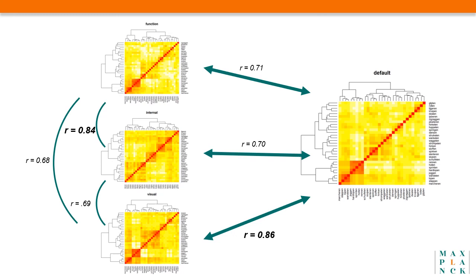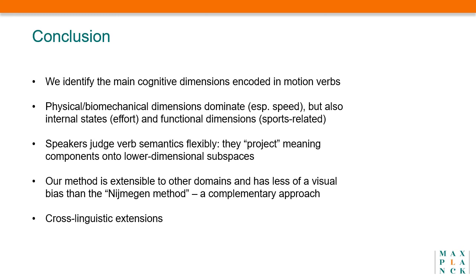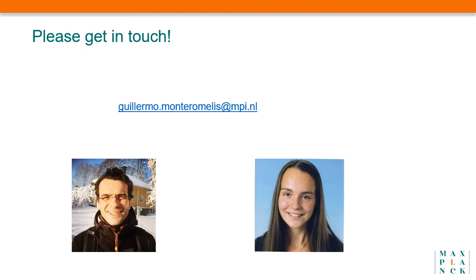When comparing the three different projections among each other, we found that judgments of function and of internal state correlated very highly. To conclude, in this study we have identified the main cognitive dimensions encoded in motion verbs. Physical or visual dimensions dominated — especially speed — but we also saw that internal states and functional dimensions played a significant role in verb semantics. We saw that speakers judge verb semantics flexibly: they project meaning components onto lower-dimensional subspaces, and they do so in a consistent manner across speakers. Our method is extensible to other domains and has less of a visual bias than the Nijmegen method; it is best seen as a complementary approach. We expect to also extend this approach cross-linguistically.